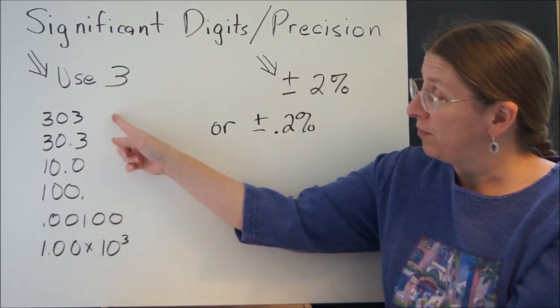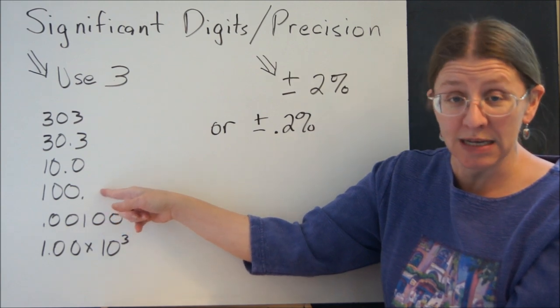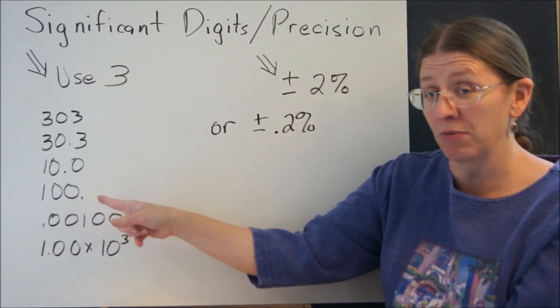So 303, 30.3, 10.0. If you want to have 100, put a decimal after the end of it. That's the 3 significant digits.